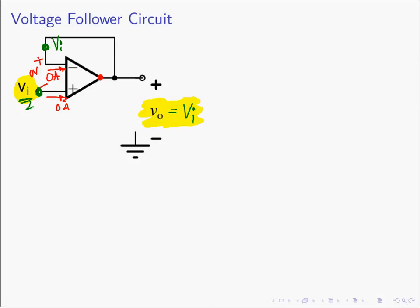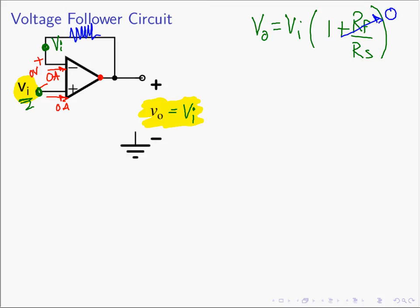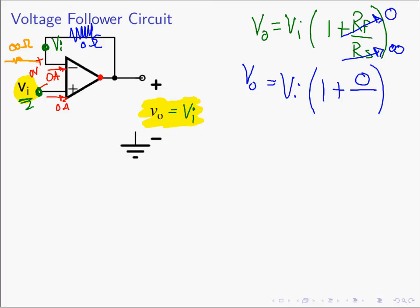We could analyze it a different way. This looks like the non-inverting amplifier: Vout equals VN times one plus RF over RS. Where are the RF and RS resistors in this circuit? The RF resistor is right there, and in our case RF is zero. The RS resistor is not visibly there — it's an infinite resistor. So RF is zero ohms and RS is infinity. Vout equals VN times one plus zero, which gives Vout equals VN. Taking zero divided by infinity makes the ratio zero, and again Vout equals VN. This is the voltage follower circuit.